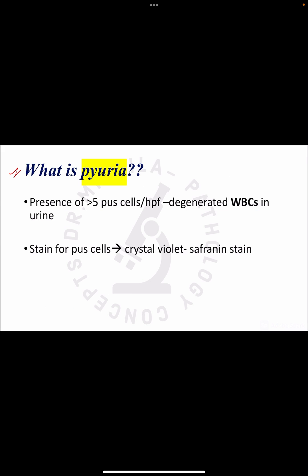The next question is: what is pyuria? The presence of pus cells more than 5 per high power field is called pyuria. Pus cells are nothing but degenerated WBCs. To identify pus cells, we can apply crystal violet safranin stain if we are finding it difficult to identify them.